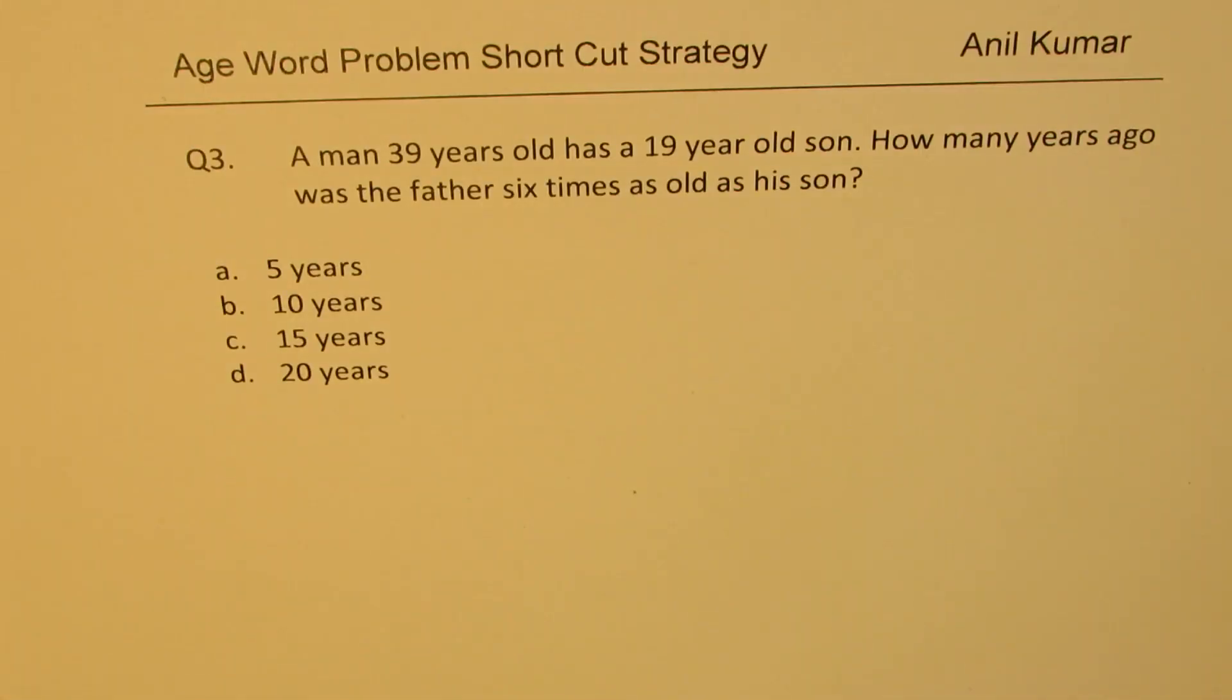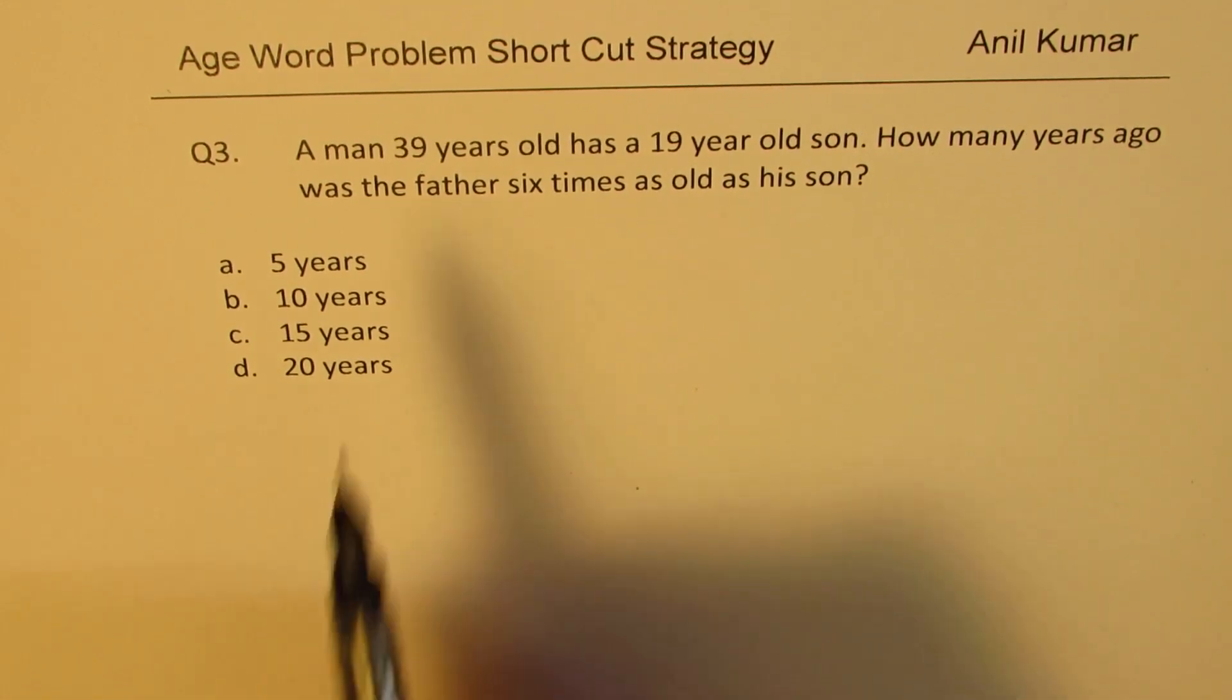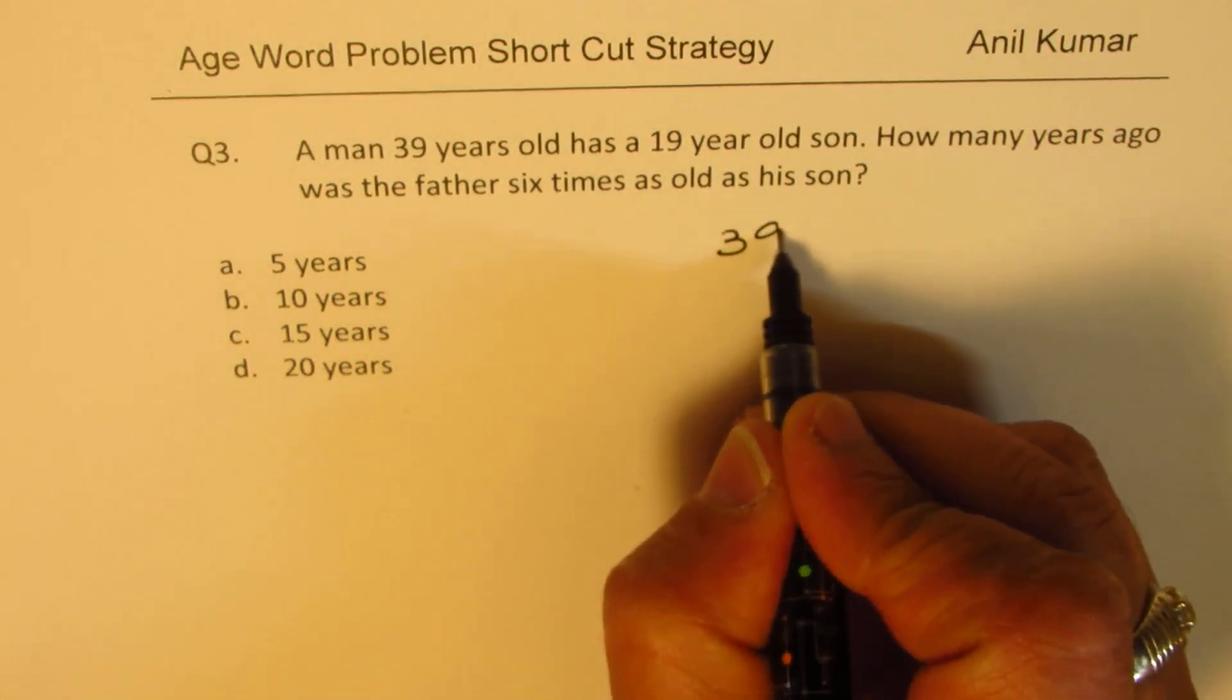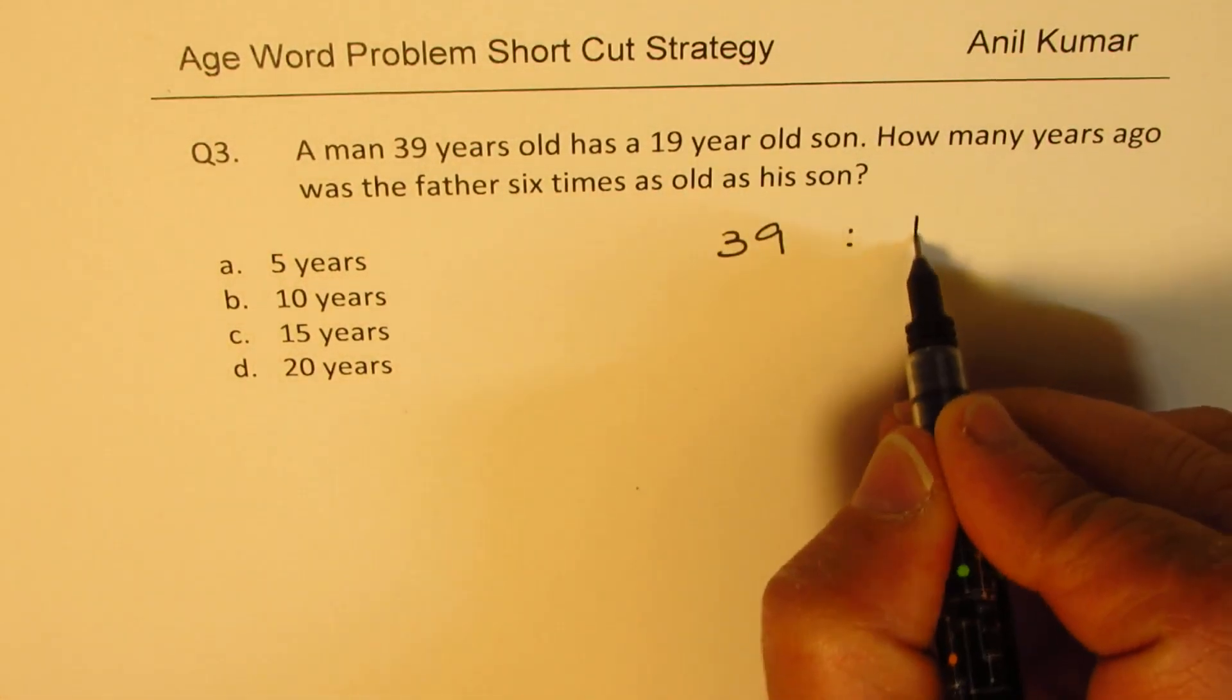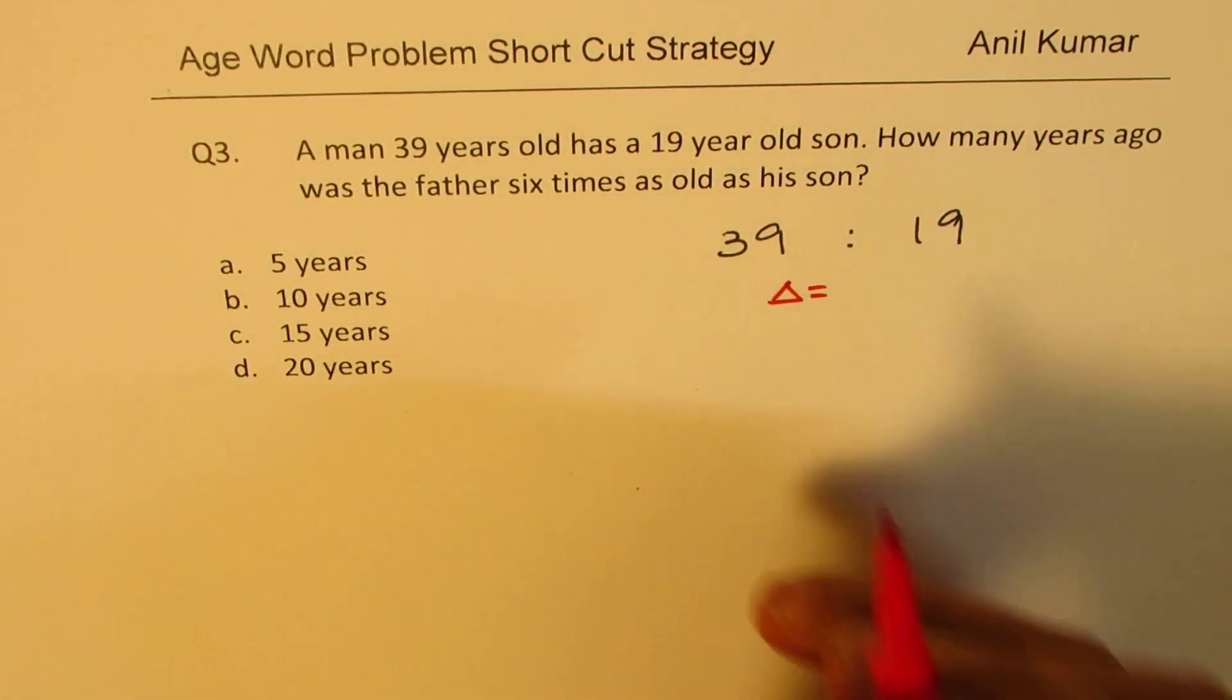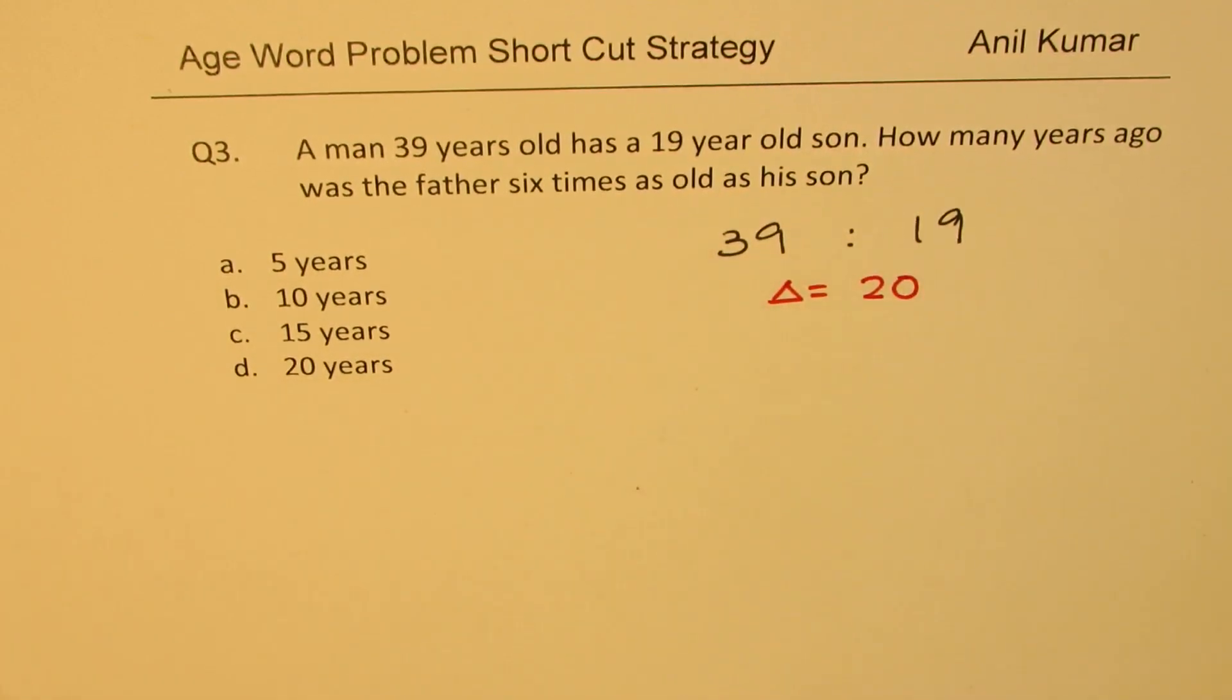Here is for you practice. Try to figure out how to do this one. Read the question, pause the video, figure it out, and then check with my solution. A man 39 years old. His son is 19 years old. So first thing you have to do, don't read further. Find the difference. This case again is just a difference of 20.